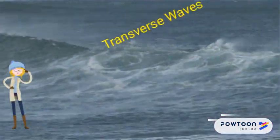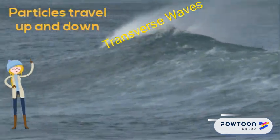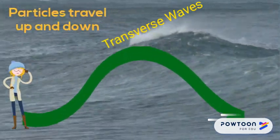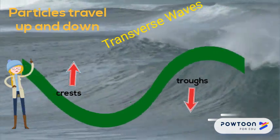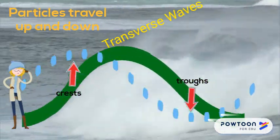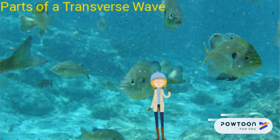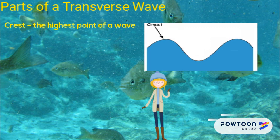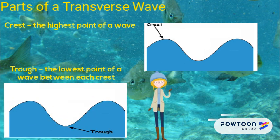In a transverse wave, the particles of the wave travel in an up and down motion. Transverse waves have crests and troughs. The crest is the highest point of the wave, and the trough is the lowest point between the crests.